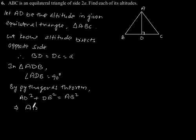Which implies AD squared plus, DB is a, so a squared. AB is 2a, which is given in the question, so 2a squared.